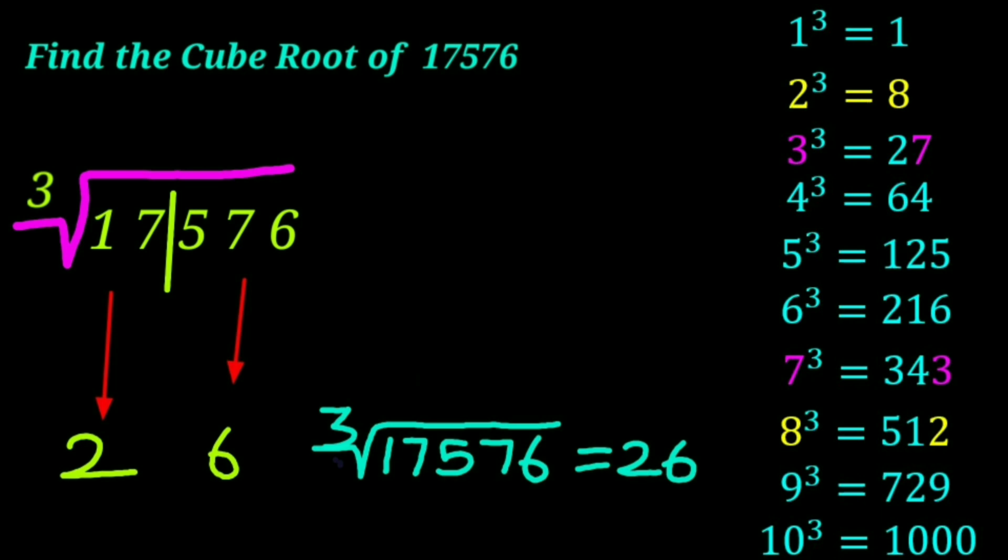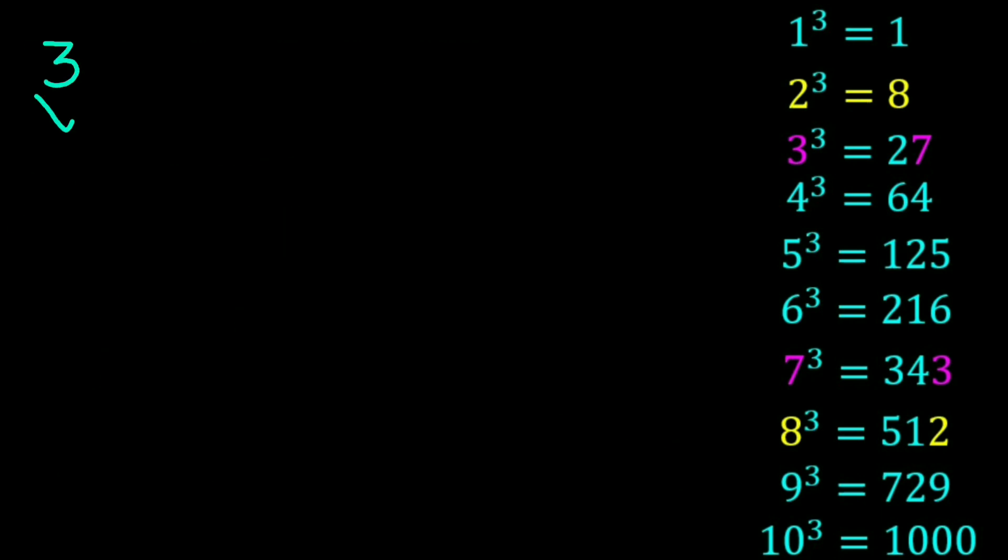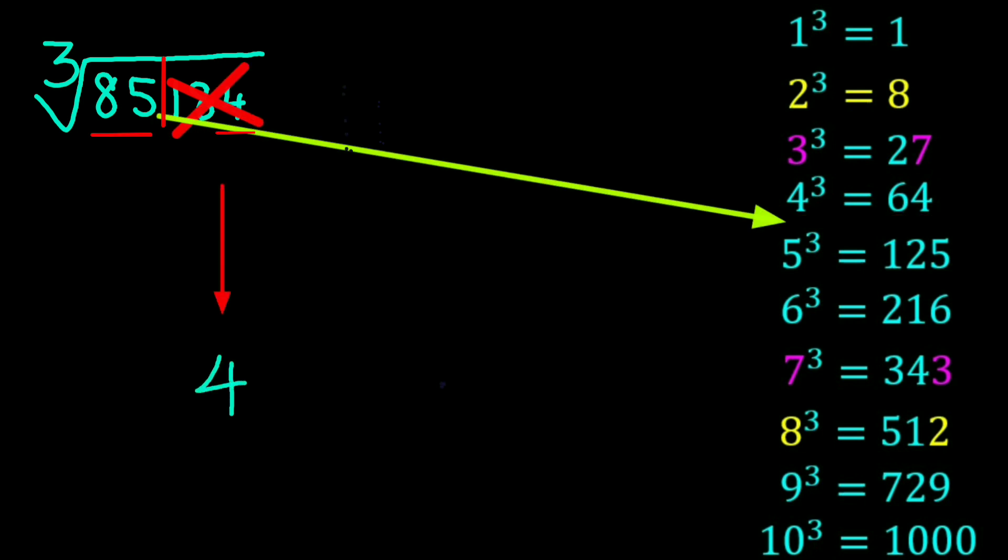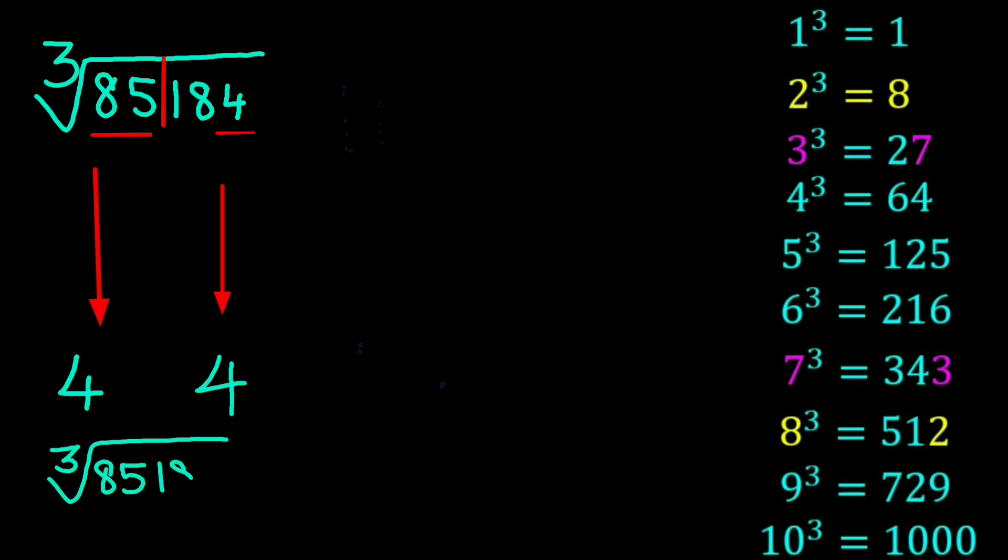Let's do this trick with mental calculation. Cube root of 85,184. Split into two parts. Last digit is four. That corresponds to the number four. Strike out the last three digits. Eighty-five lies between the cube of four and five. So we put four. Cube root of 85,184 is forty-four.